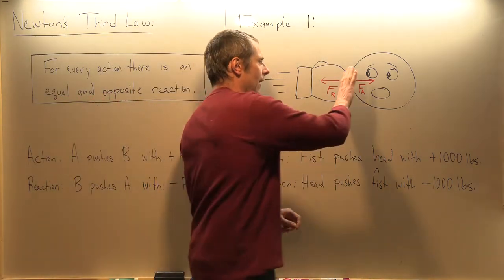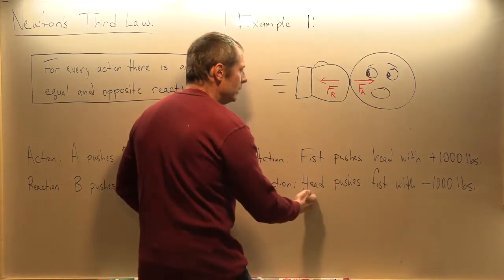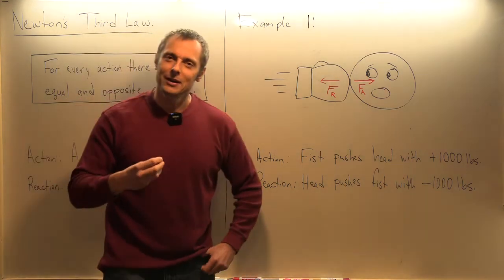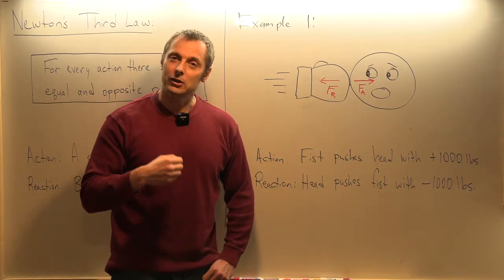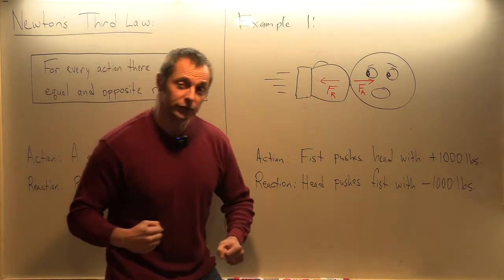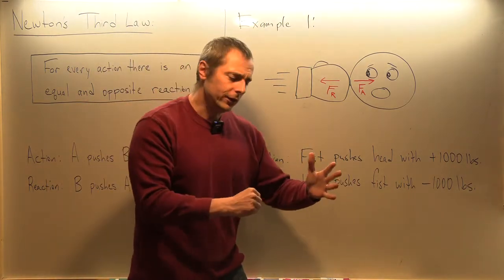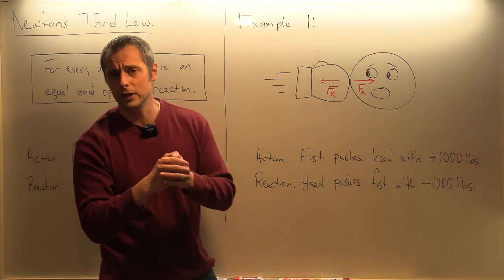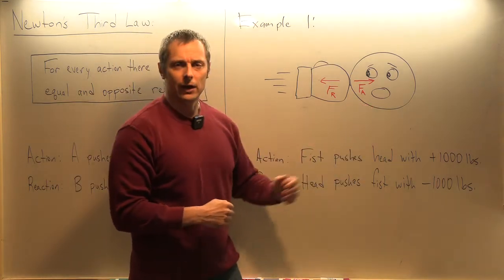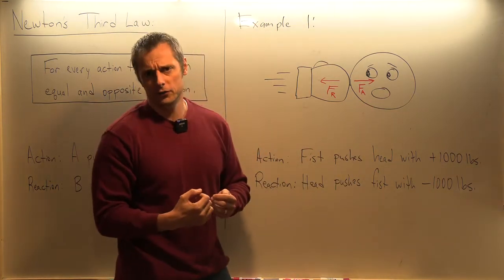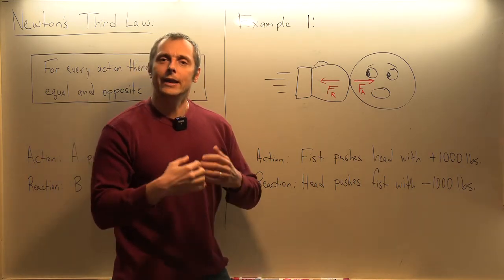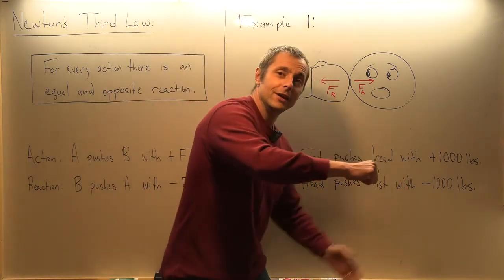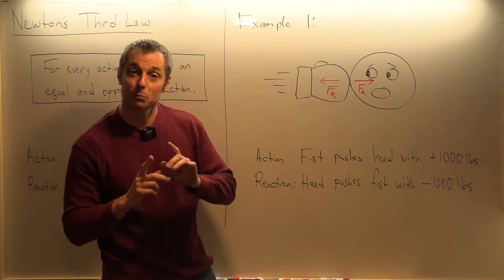What's the reaction to that? We take fist and put it over here and take head and put it over here. So fist pushes head with a thousand pounds. That's the action. The reaction is the head pushes the fist right back with a thousand pounds. And that's the remarkable thing. Because a lot of people would say when that boxer punches, maybe the head hits back a little bit, but it can't be a thousand. And it's not true.